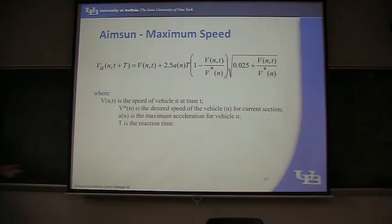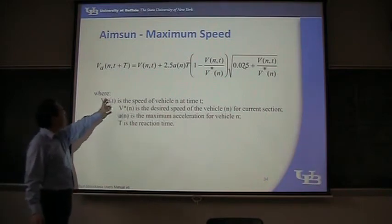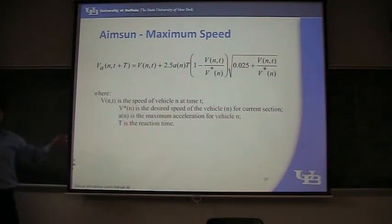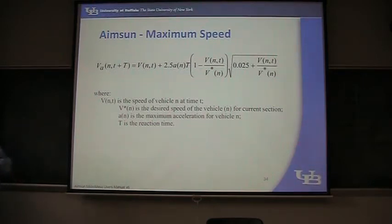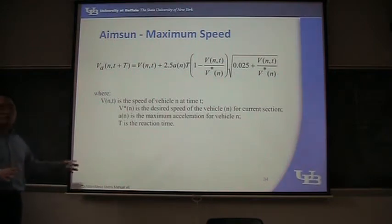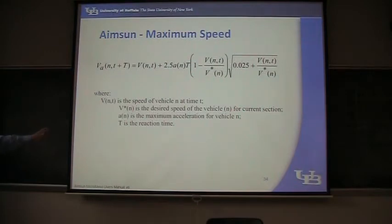But these are only decided by the desired speed and the speed of itself. So in this equation, we don't see the influence of the leading vehicle. This is called maximum speed — the speed that the current vehicle wants to get. It has nothing to do with the leading vehicle. Remember this: the maximum speed a vehicle can get at any time. This equation looks ugly because of calibration.